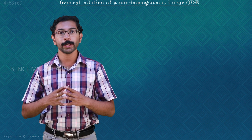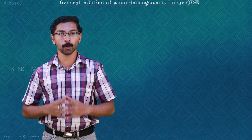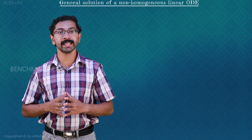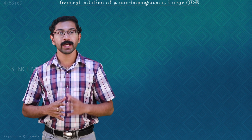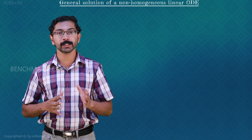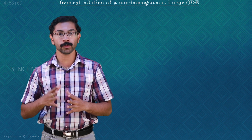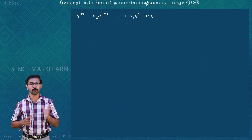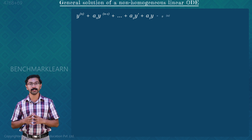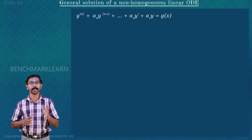General solution of a non-homogeneous linear ODE. In this module, we are focusing on non-homogeneous linear differential equations. A non-homogeneous linear differential equation of nth order with constant coefficients is of the form: nth derivative of y plus a_n into (n−1)th derivative of y plus etc. plus a2 into y' plus a1 into y equals g(x), where g(x) cannot be equal to 0.